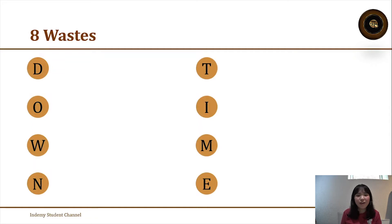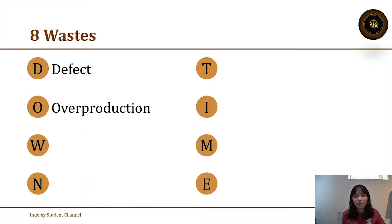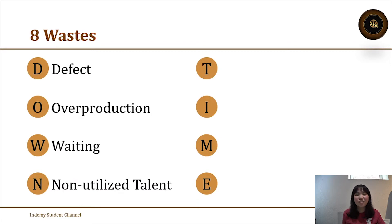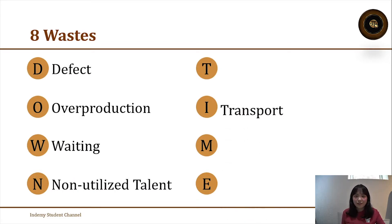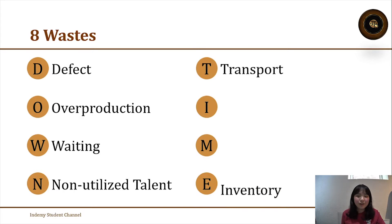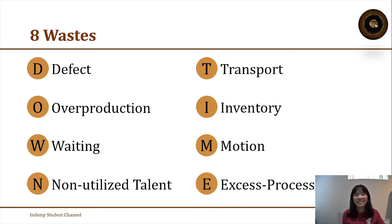The eight wastes can easily be remembered by the abbreviation DOWNTIME. D stands for Defects, O for Overproduction, W for Waiting, N for Non-utilized talent, T for Transport, I for Inventory, M for Motion, and E for Excess processing.